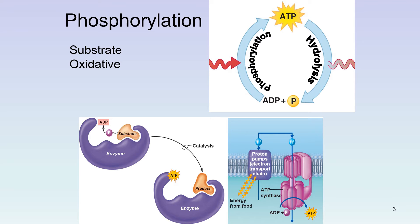Oxidative phosphorylation uses oxygen and a specific enzyme called ATP synthase, which is embedded in the inner membrane of your mitochondria. In this process, it makes a lot of ATP very quickly. The final type, photophosphorylation, uses light, and it's discussed with photosynthesis in the next module.